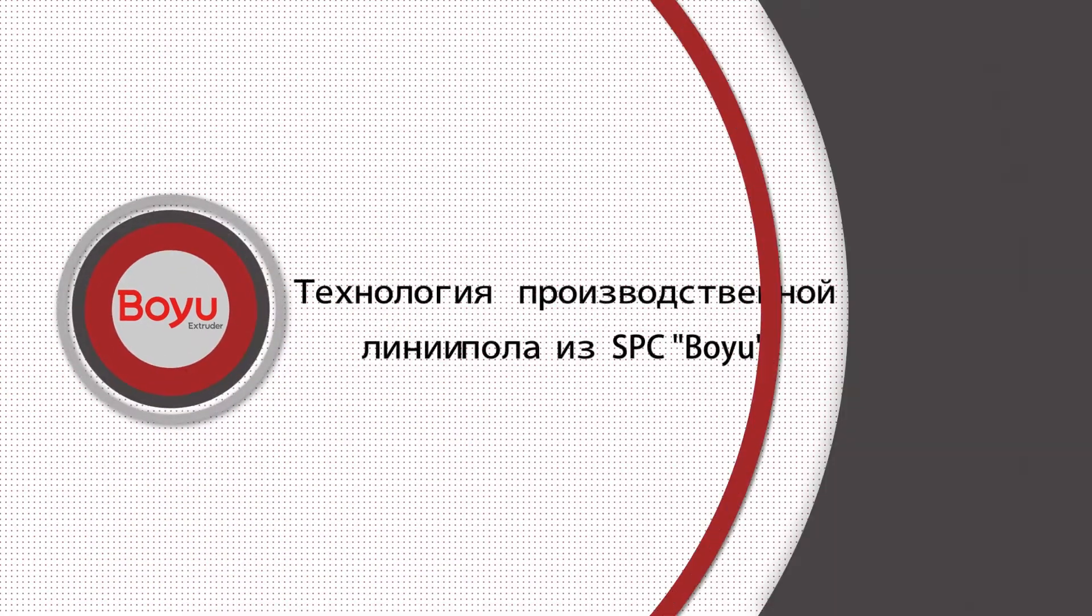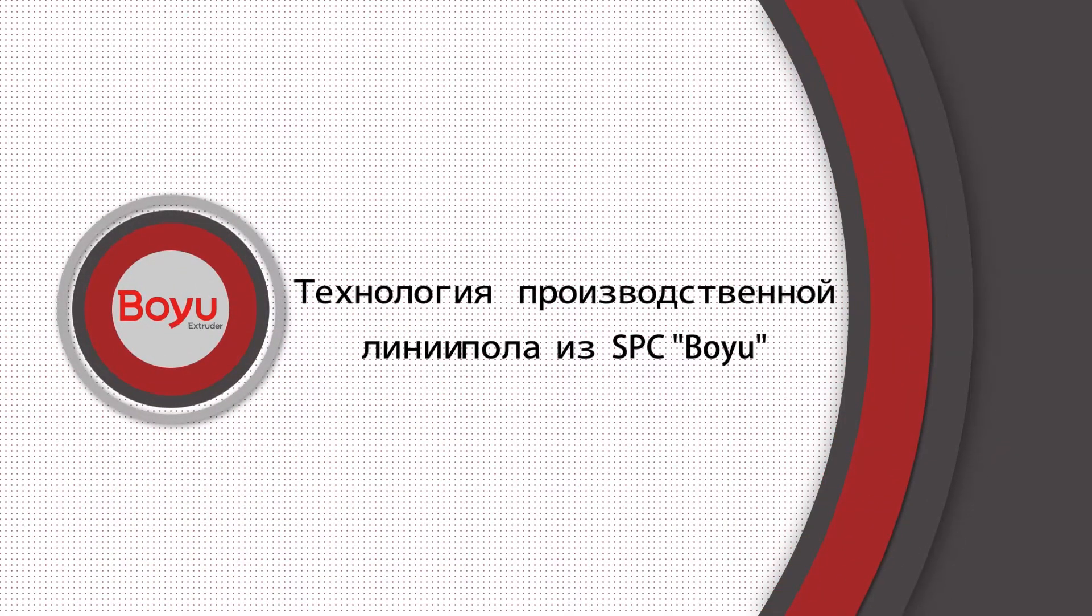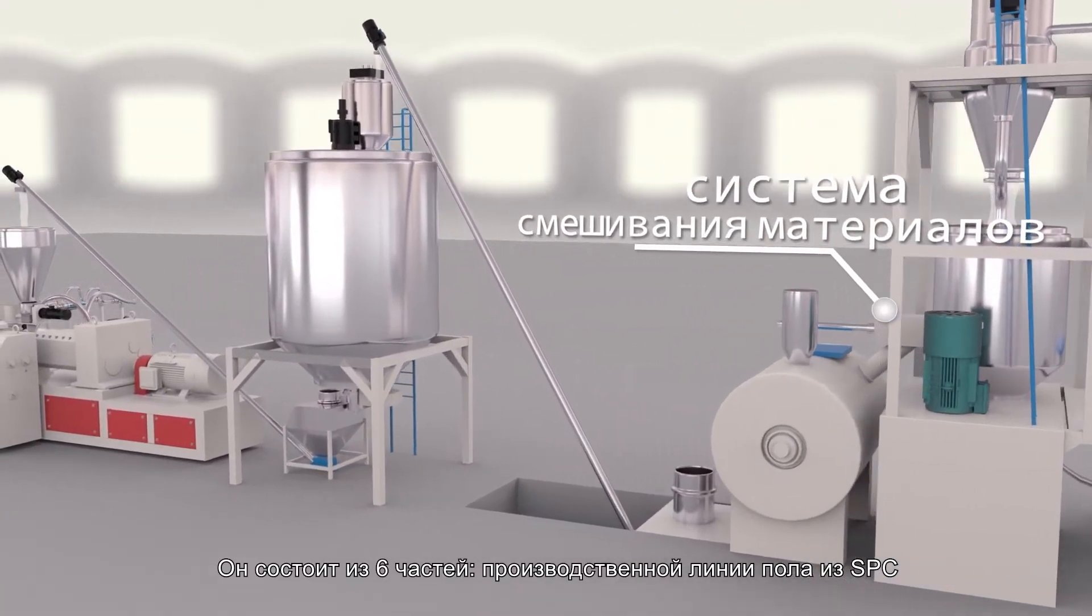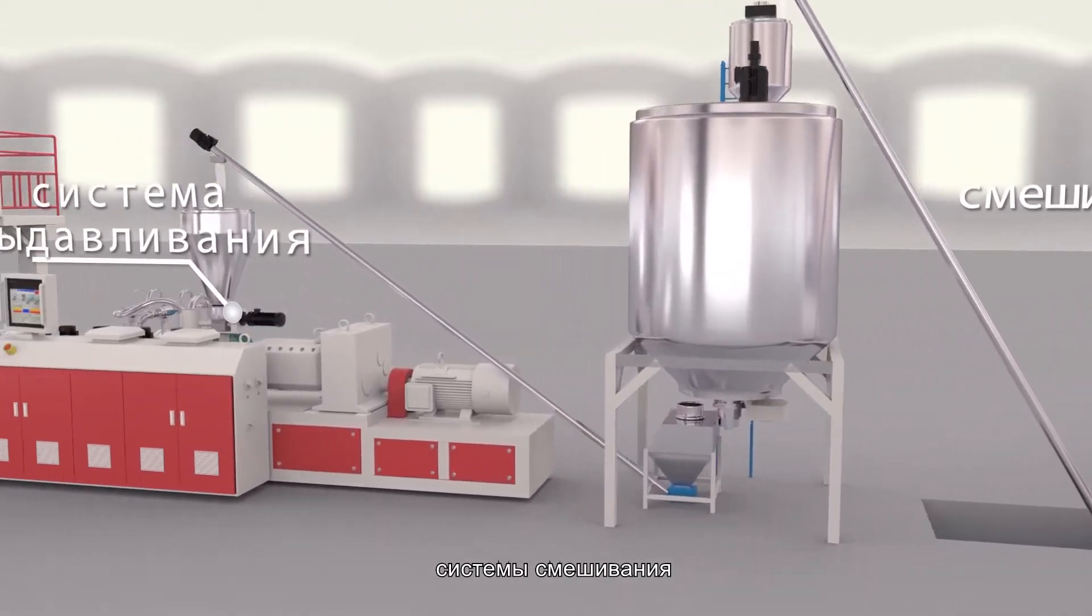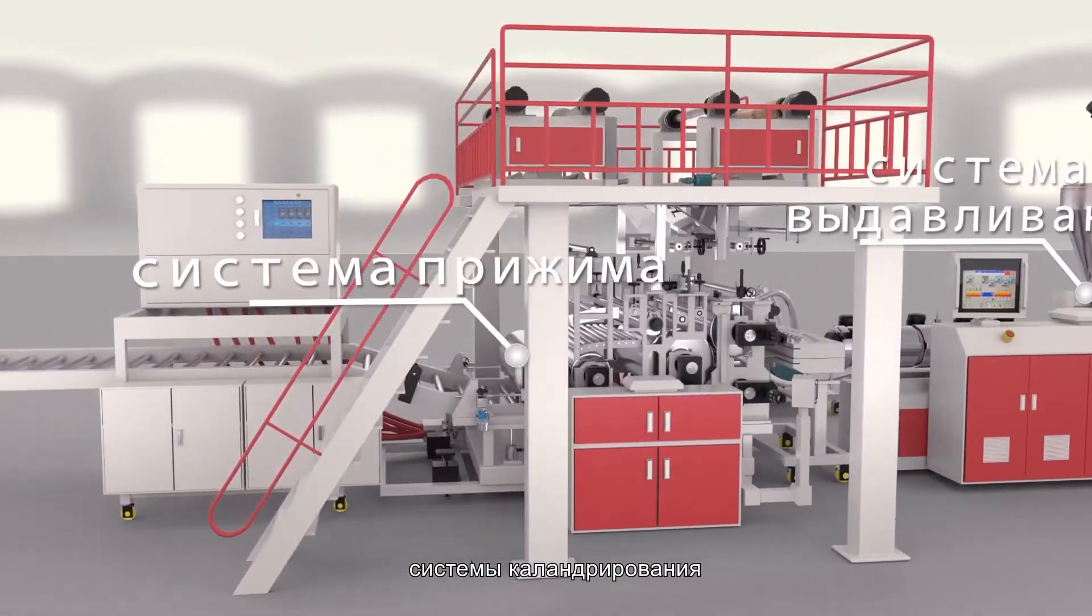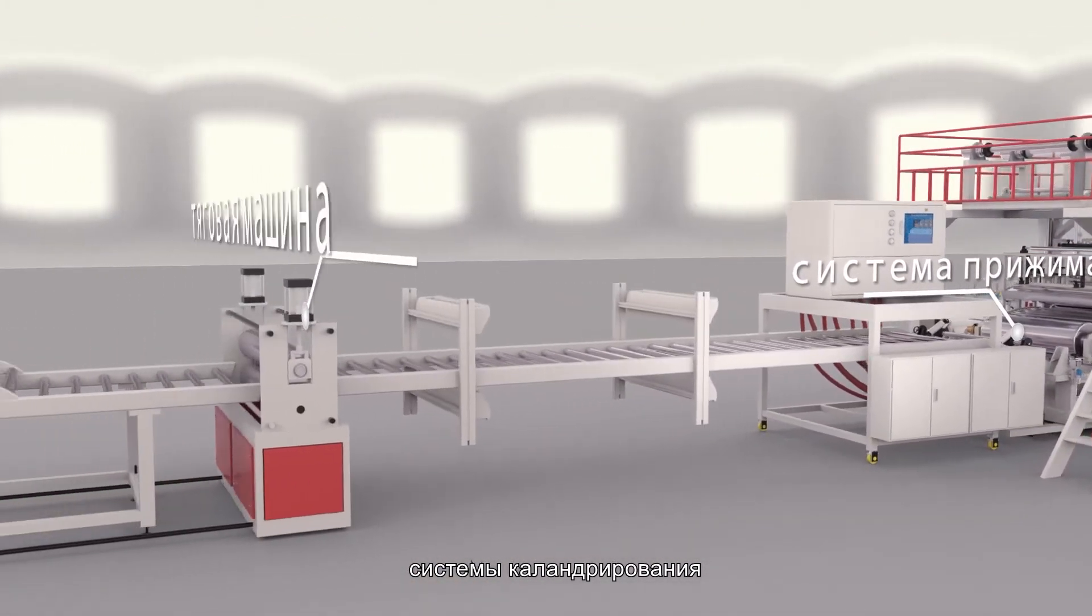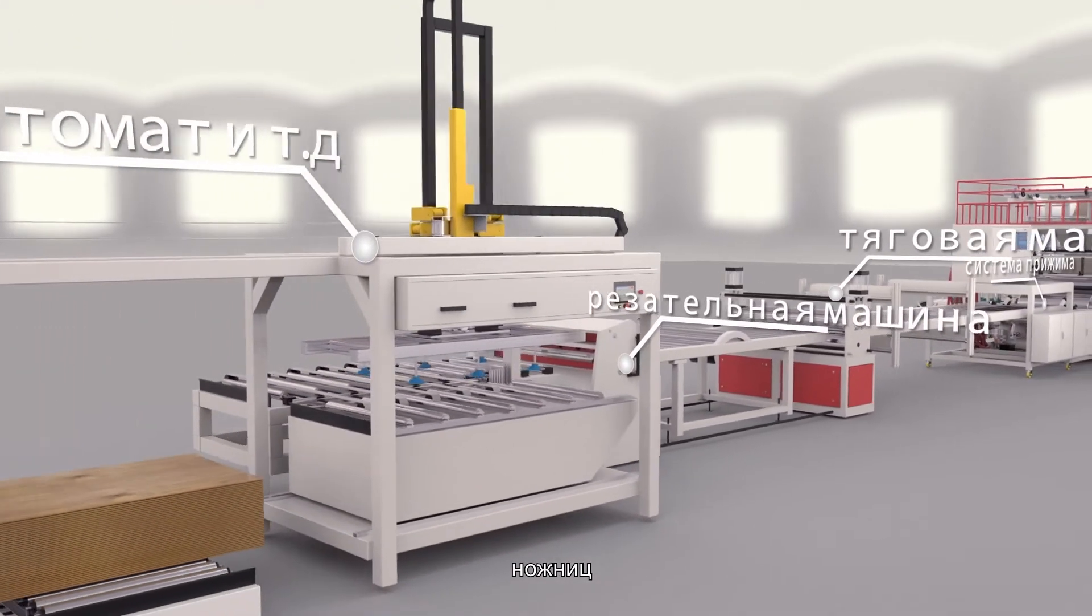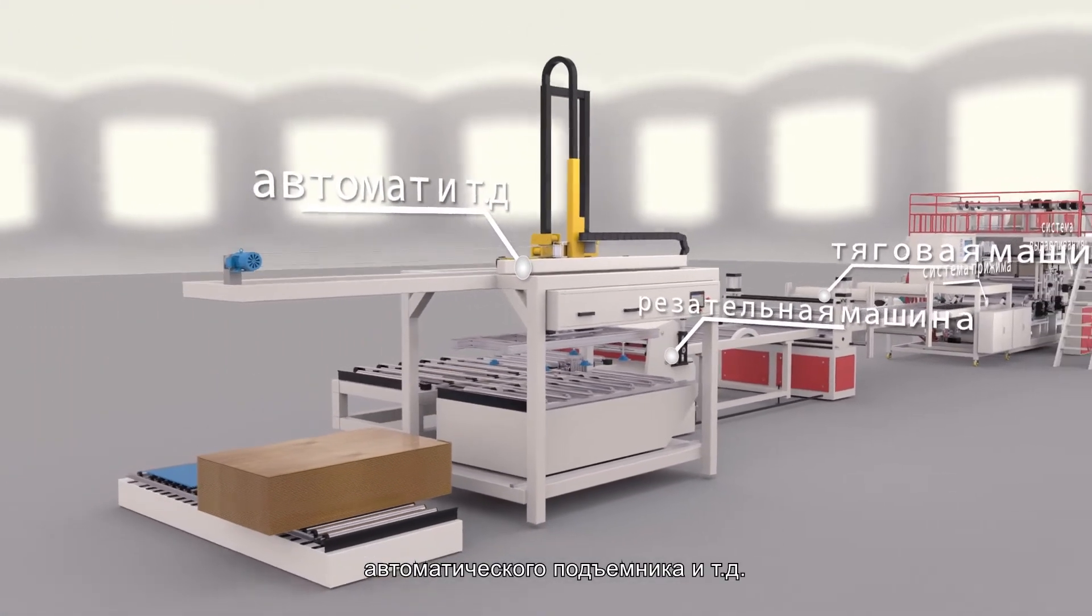Process Technology of STC Floor Production Line. STC Floor Production Line consists of six parts: Mixing System, Extrusion System, Calendering System, Tractor, Shearing Machine, and Automatic Plating Machine.